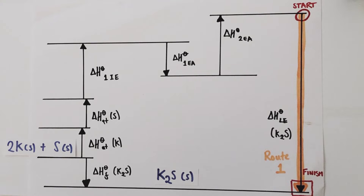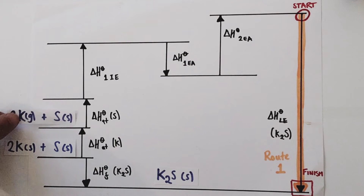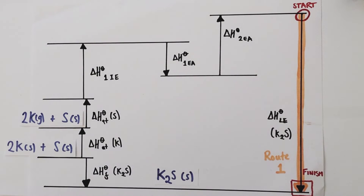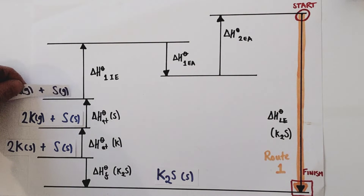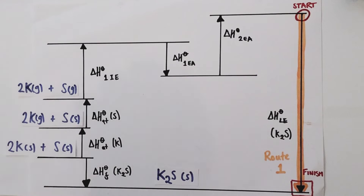So in other words, we've been turning these two moles of potassium atoms in the solid state into two moles of potassium atoms in the gaseous state. I haven't yet atomised the sulphur atoms — that comes next. The next enthalpy change is the atomisation of sulphur. So again, we convert one mole of sulphur atoms in the solid state into one mole of sulphur atoms in the gaseous state. Now all of the atoms of the various elements present are in the gaseous state.